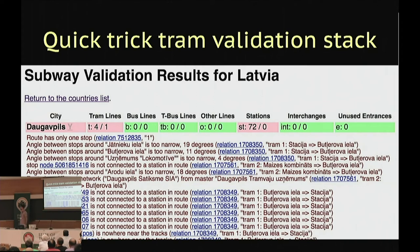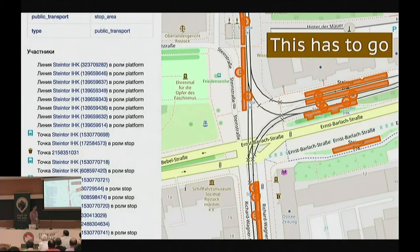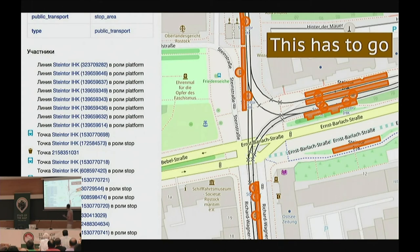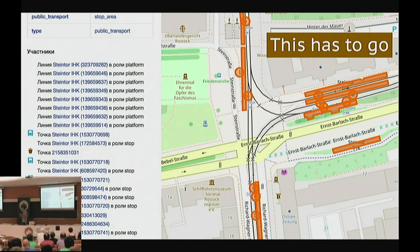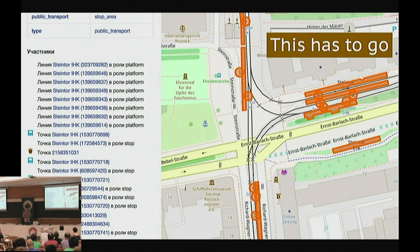What I found was that stop areas are a mess, and linking platforms to tram stops is very hard. In many cities there were stop areas containing everything — in one case seven different tram stops all in one stop area used to mark an interchange. With that kind of structure you cannot tell which tram stop belongs to which platform. So this has to be fixed, and I would like some help.